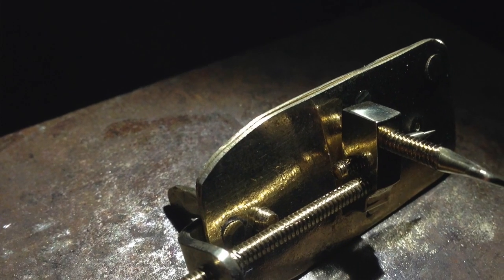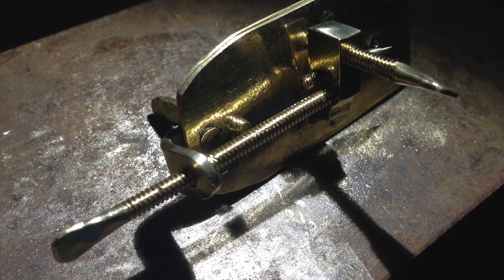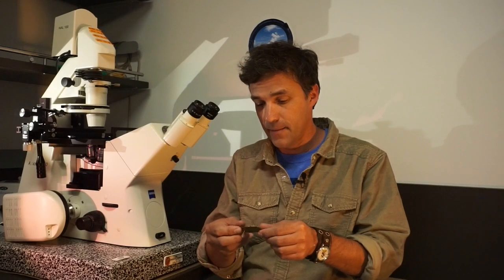Leeuwenhoek's microscopes were actually fairly complex. This is a replica of one here. It's made of brass, has a glass lens, and a sophisticated little mechanism to hold the sample and to focus and so forth. He made hundreds of these and they're very complex to make. So what we're going to do is we're going to make a microscope that functions very similarly, but it's a lot easier to make and it's made out of very simple materials.